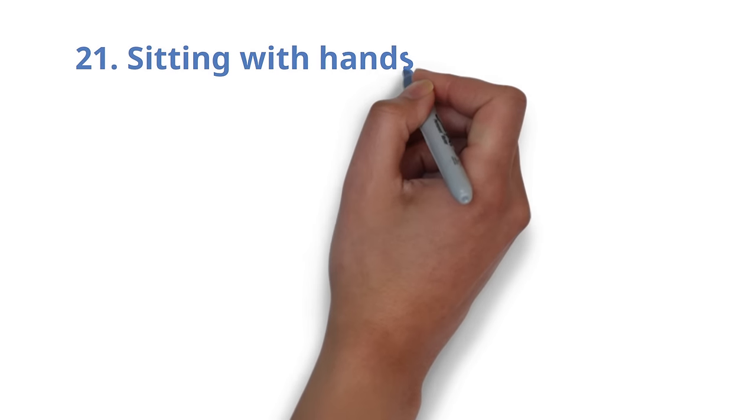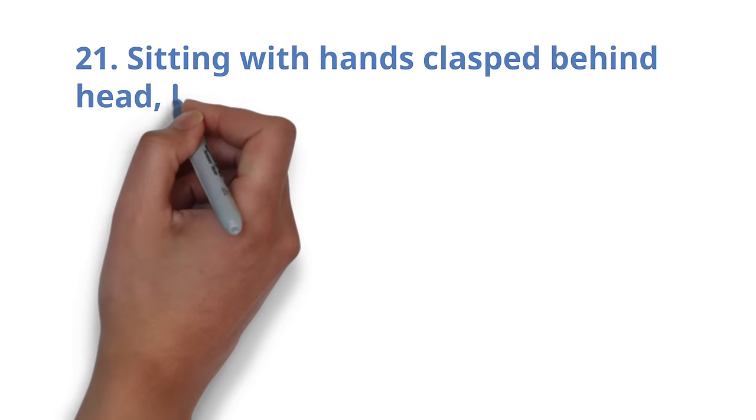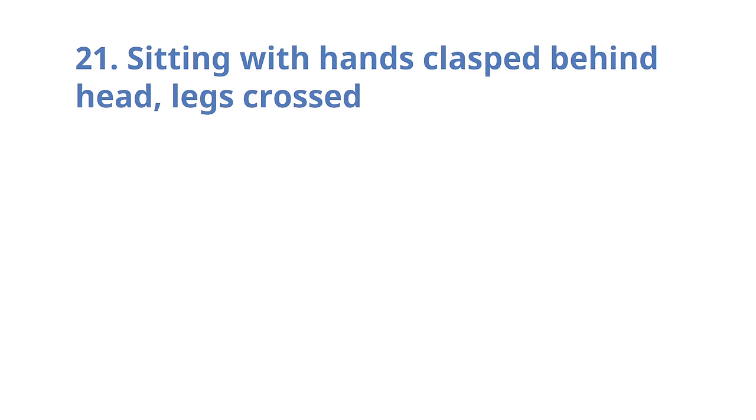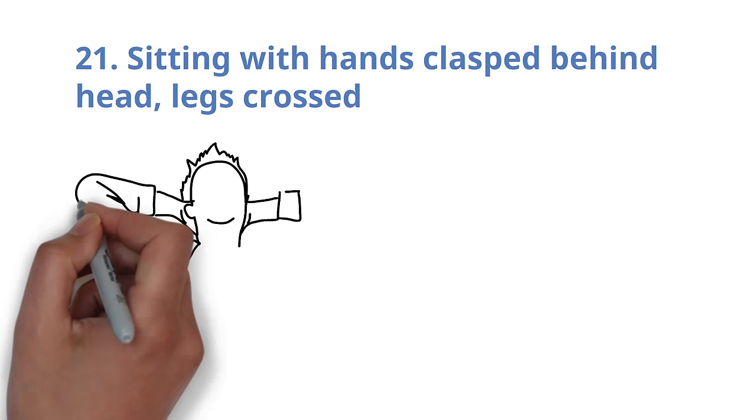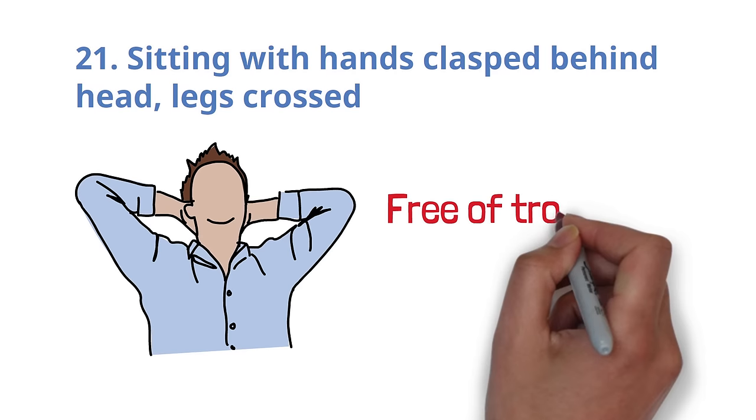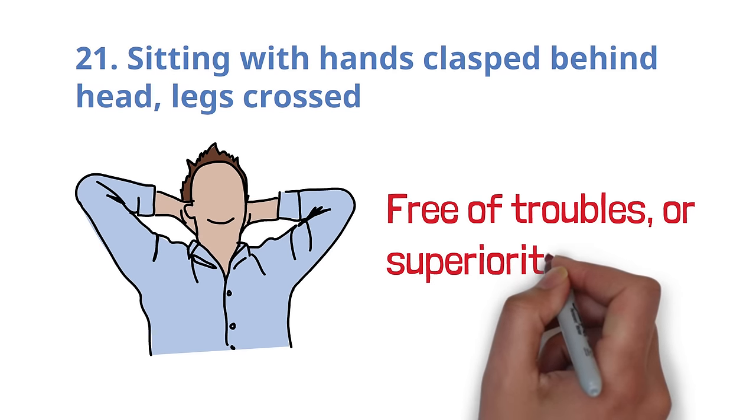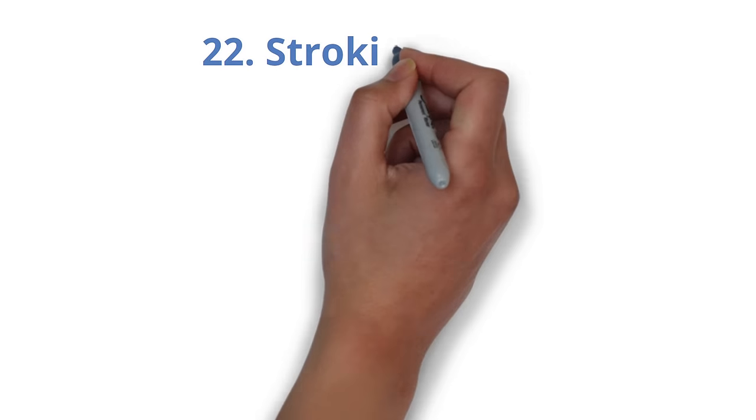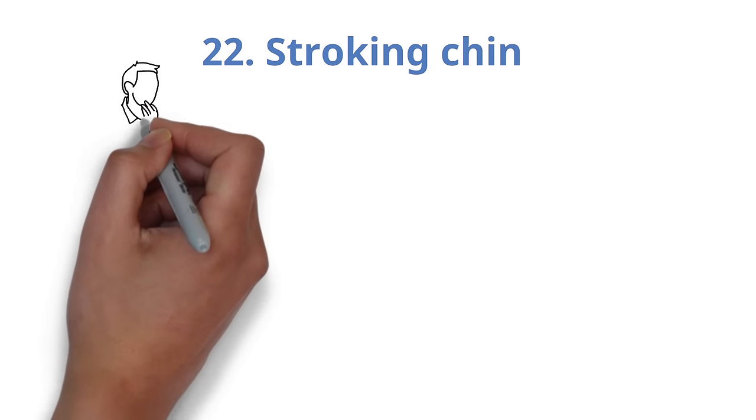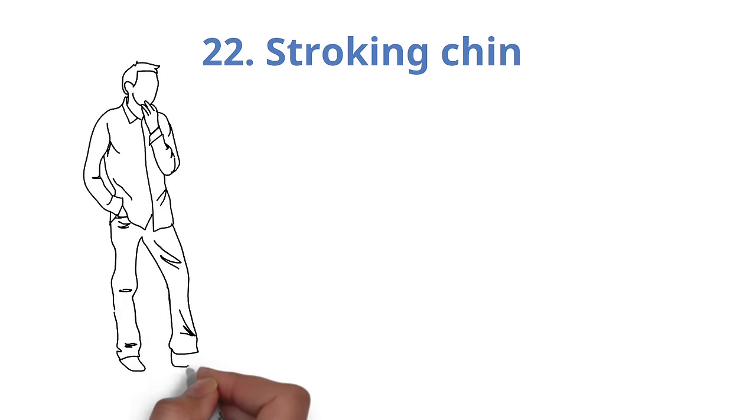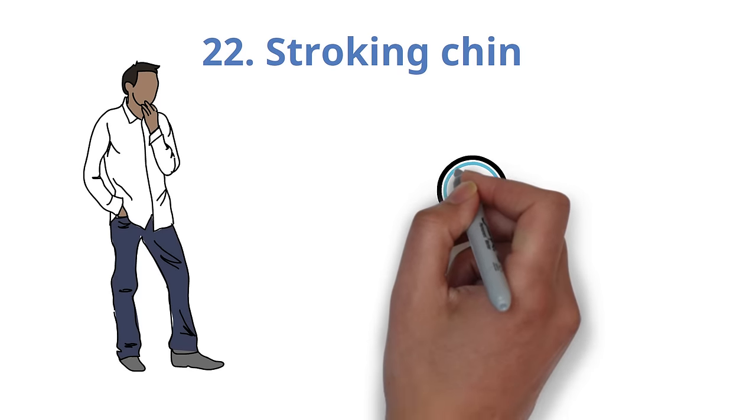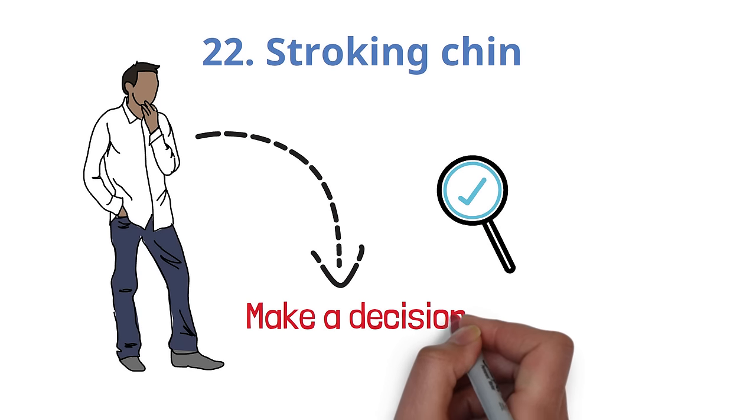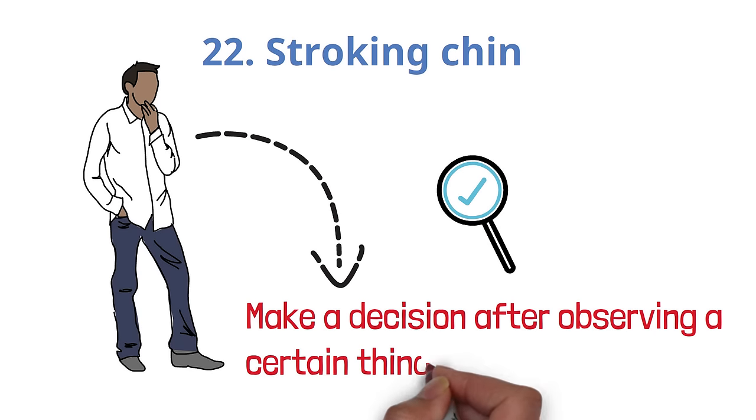Number 21. Sitting with hands clasped behind your head and your legs crossed. This can indicate a feeling of relaxation, like you're free from troubles, or superiority and confidence in your particular area or situation. Number 22. Stroking your chin. This invokes being deep in your thoughts and trying to make sense of a situation. It also means trying to make a decision after observing a certain thing.